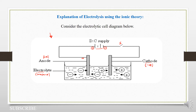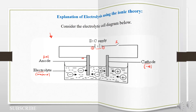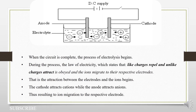So let us see what we mean by the ionic theory. The first point to note is that whenever we complete our circuit, and for that to be possible — that is by closing the switch — then the process of electrolysis will begin.